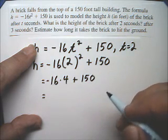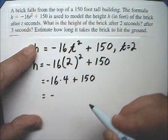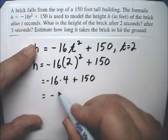So minus 16 times 4, that's a negative number. And 4 times 16 is 64.